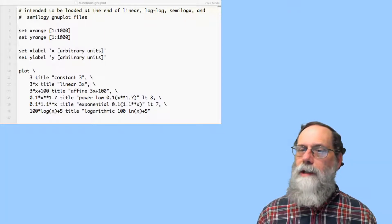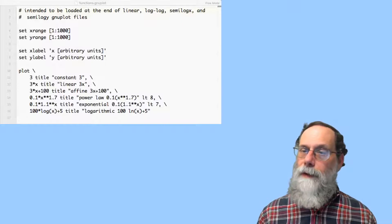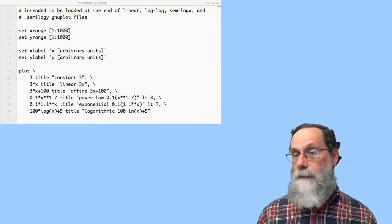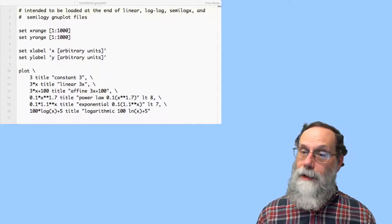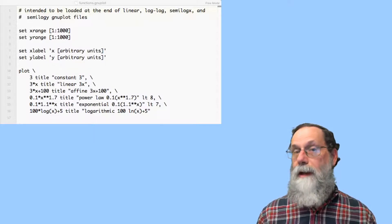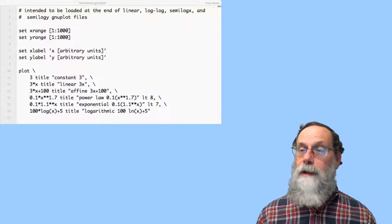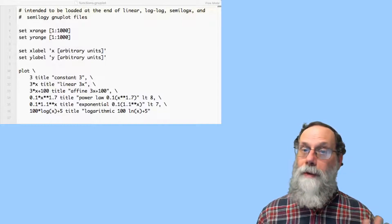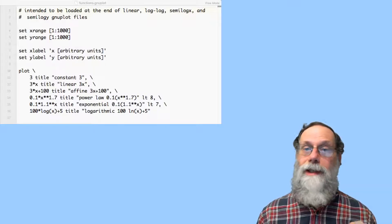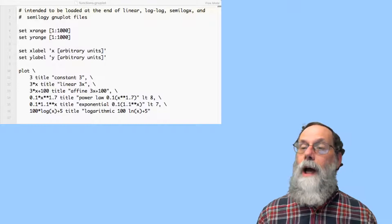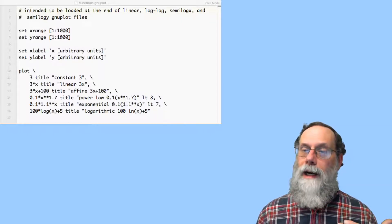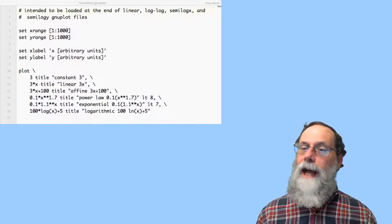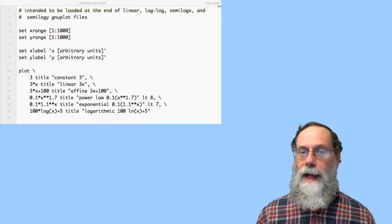The generalization of both the constant and the linear function is the affine function. It's basically a linear function plus a constant. And this is the standard formula for a straight line. And when I'm talking about straight lines for constants, linear functions and affine functions, I'm talking about what happens on the usual case of a linear axis for both the x and the y axis.